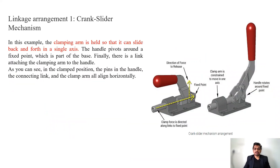First, let's look at what toggle clamps are. We have a linkage arrangement with a crank and slider mechanism. Here you can see the horizontal action toggle clamp. The clamp force is applied in the horizontal direction. This is the fixed point, and this is the direction of force release — you move the handle in this direction to unload the job or remove the clamping force. The clamp arm is constrained to move in the horizontal direction only.